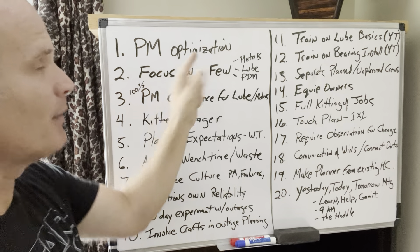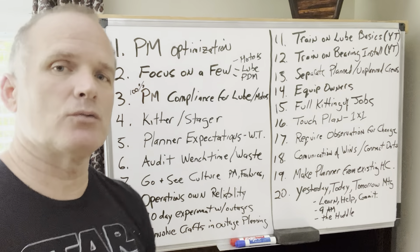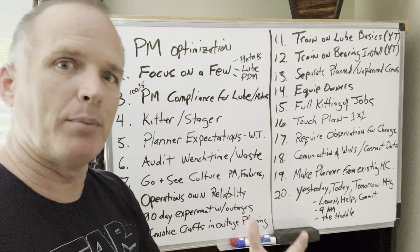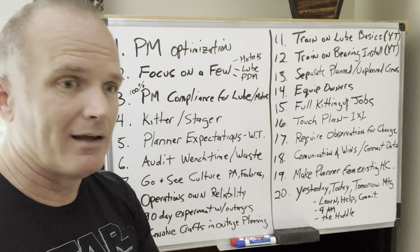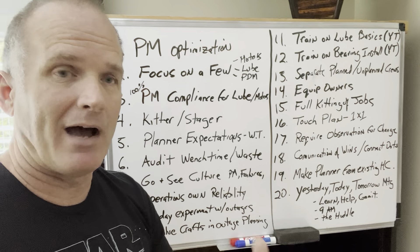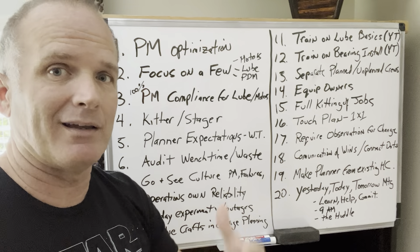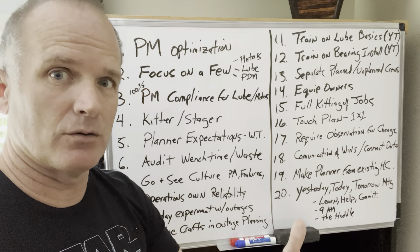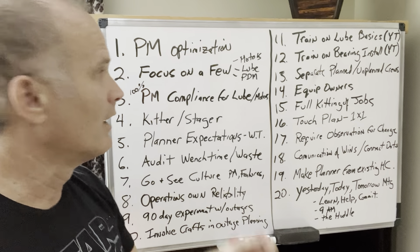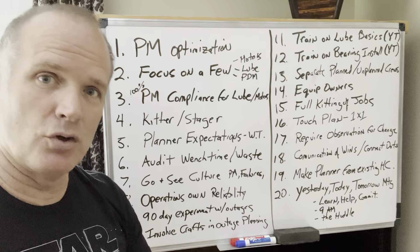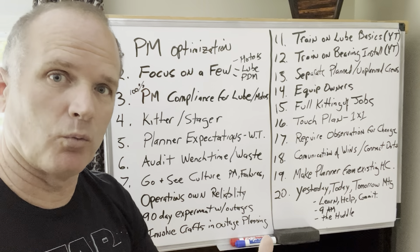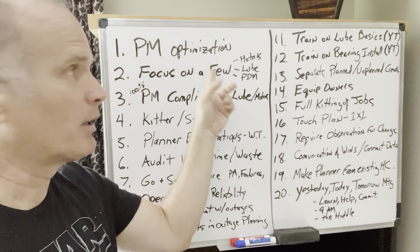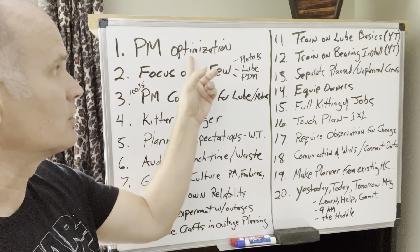Number one: PM optimization. This was huge at my plant. You're doing a lot of PMs, most likely, that add no value. You're doing things weekly that you can do every month. Things you're doing every month that you can do every quarter. Things you're doing with two people you could do with one. PM optimization — is it based on failure mode, the actions you're taking?